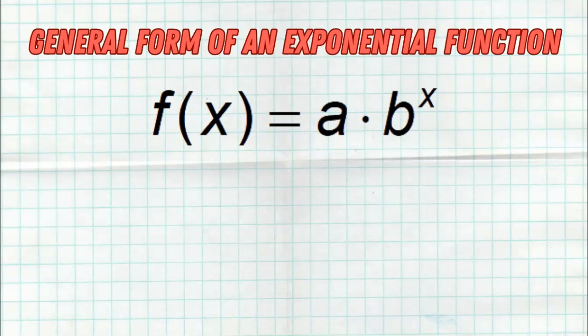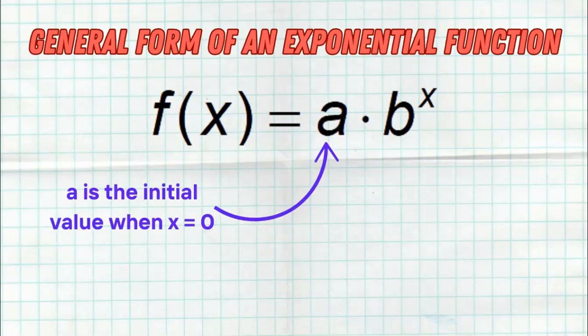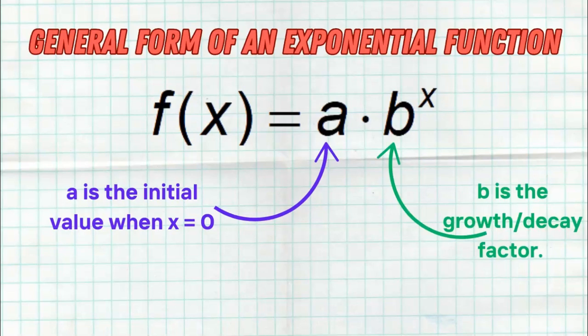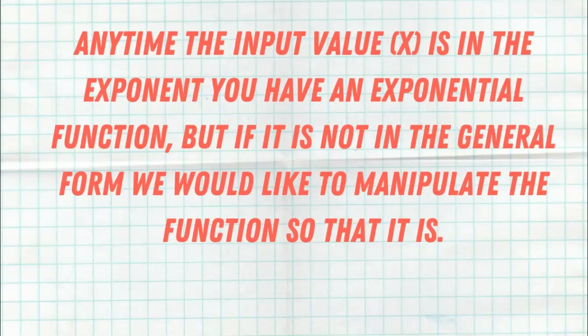To understand the manipulation of exponential functions, we first have to know the general form of an exponential function, which is f(x) = a times b raised to the x. As long as the x is in the exponent, you have an exponential function. The a is the initial value when x equals 0, because b raised to 0 is always 1, and 1 times a is a. And b is, of course, called the growth or decay factor. If a function is not in the general form a times b to the x, we want to manipulate it so that it is.